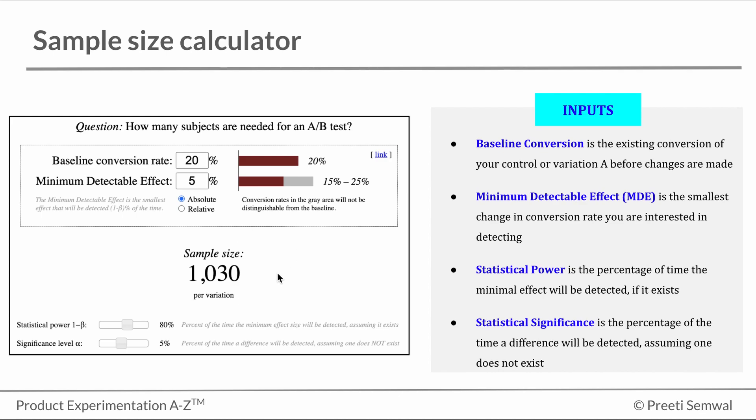Given these inputs, the calculator throws out the sample size required per variation. In this case, it's a minimum of 1030 data points per variation. So that's how sample size calculation works.